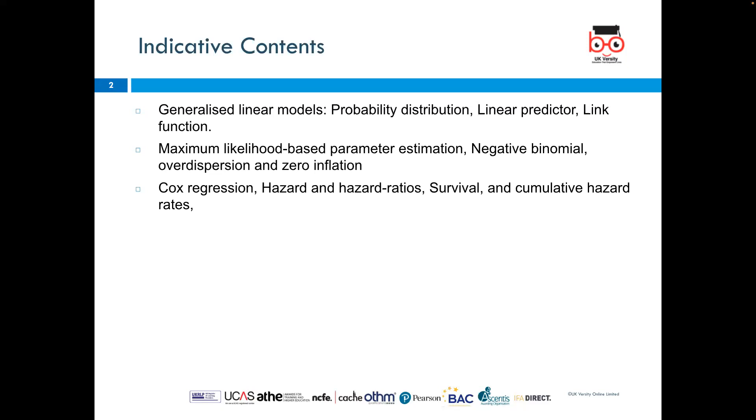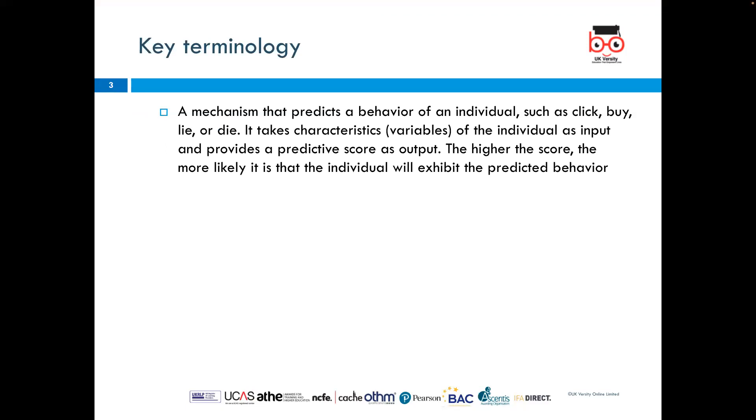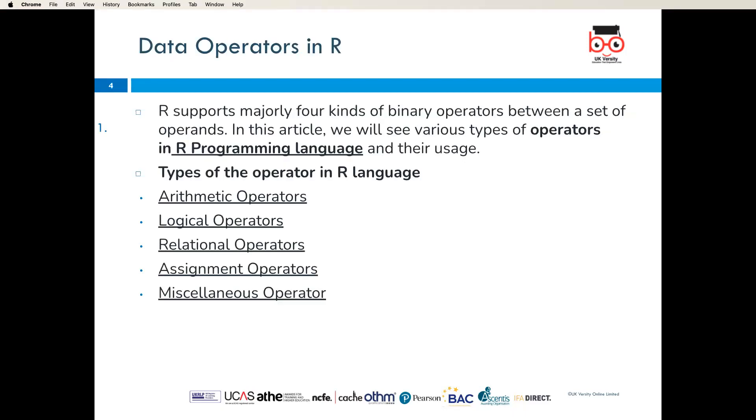These are the key terminology today: a mechanism that predicts a behavior of an individual such as click, buy, lie, or die. It takes characteristics or variables of the individual as input and provides a predictive score as output. The higher the score, the more likely it is that the individual will exhibit the predicted behavior.